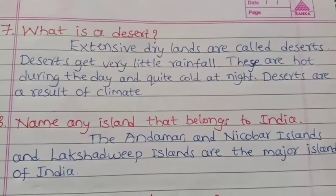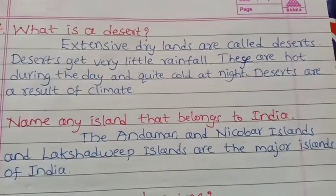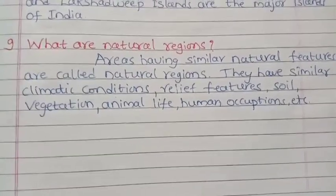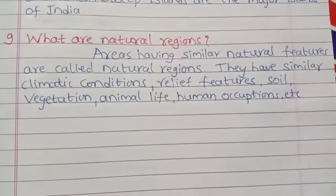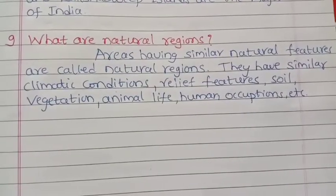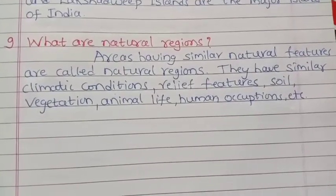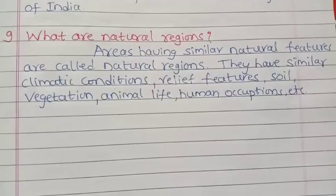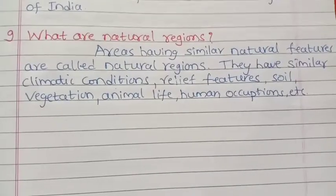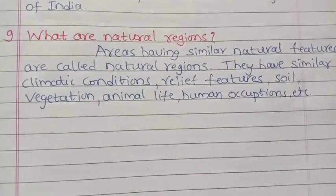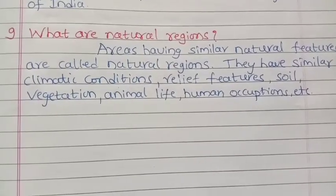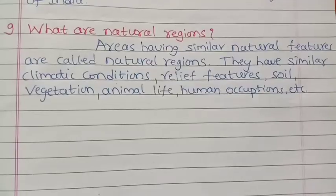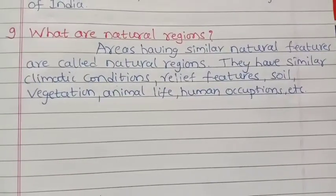What are natural regions? Areas having similar natural features are called natural regions. They have similar climatic conditions, relief features, soil, vegetation, animal life, and human characteristics.